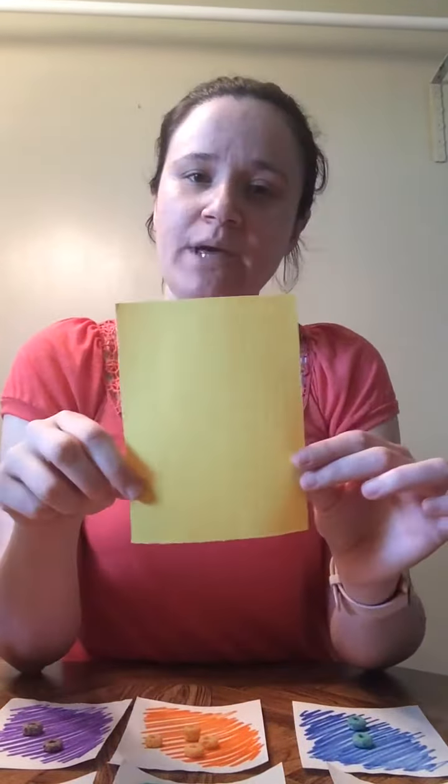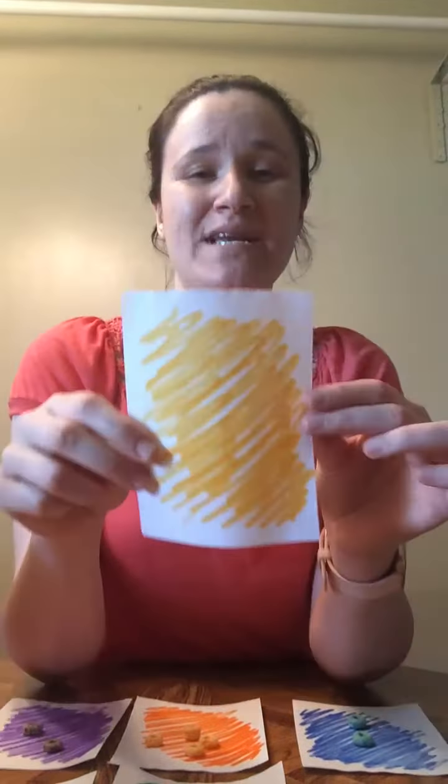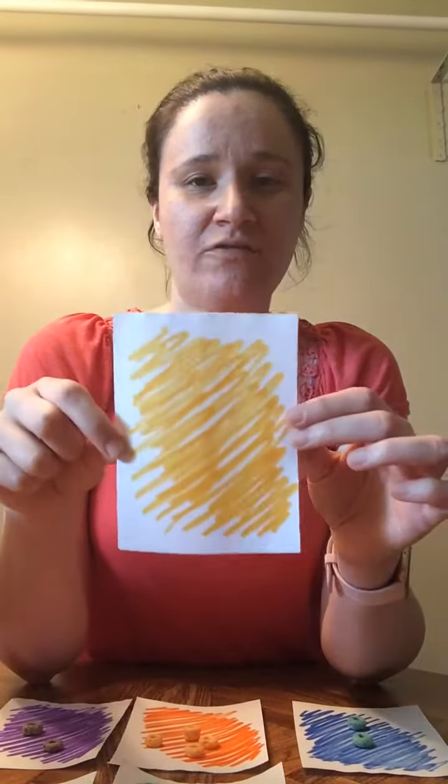You can either use construction paper or if you don't have construction paper at home, you can just make squares and color the fruit loop colors on them.